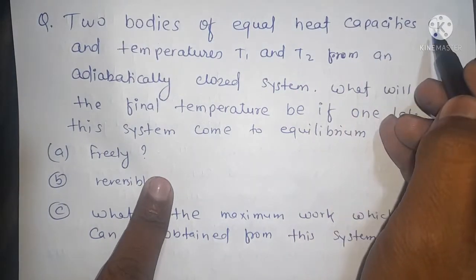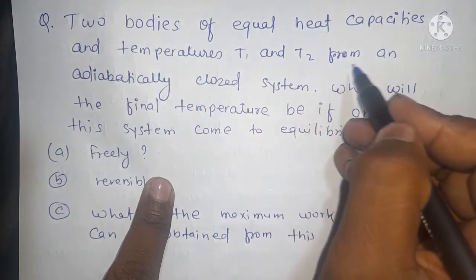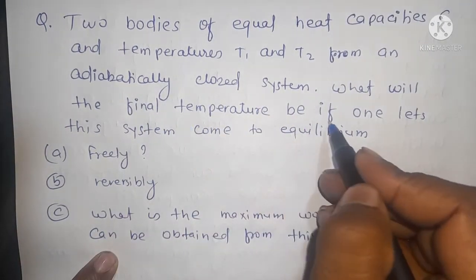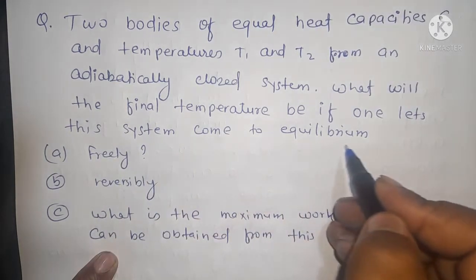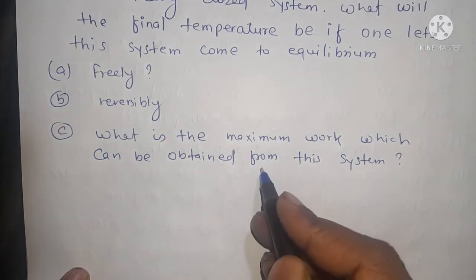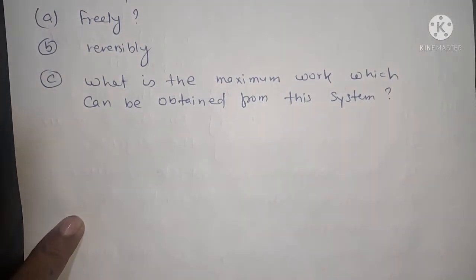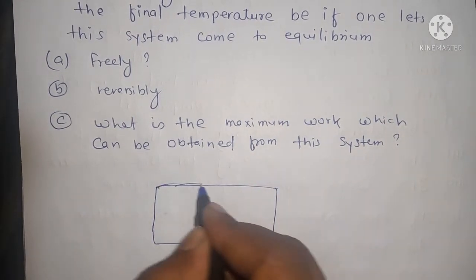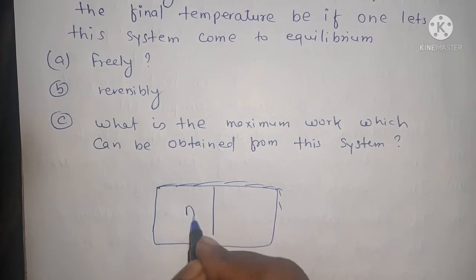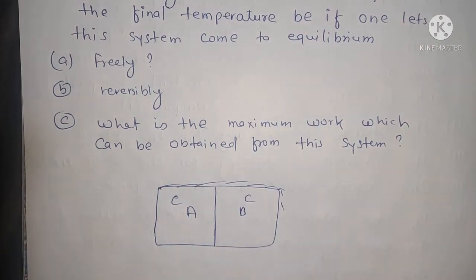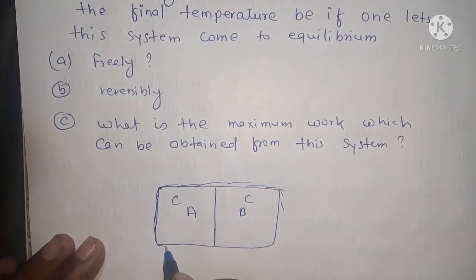Two bodies of equal heat capacity C and temperatures T1 and T2 form an adiabatically closed system. What will be the final temperature Tf if one lets this system come to equilibrium freely, reversibly, and what is the maximum work which can be obtained from this system? Suppose we have an adiabatic chamber with two systems A and B, both with the same heat capacity, forming the same adiabatically closed system.